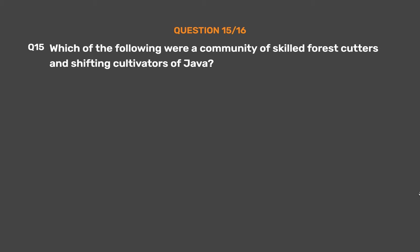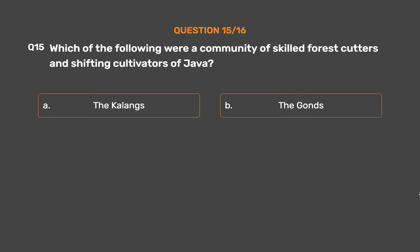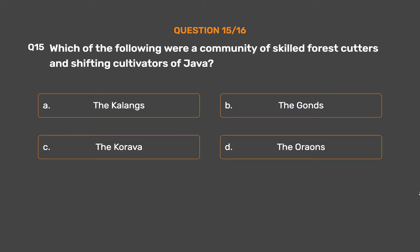Question 15: Which of the following were a community of skilled forest cutters and shifting cultivators of Java? Option A: The Kalangs. Option B: The Gauns. Option C: The Korava. Option D: The Oranes.